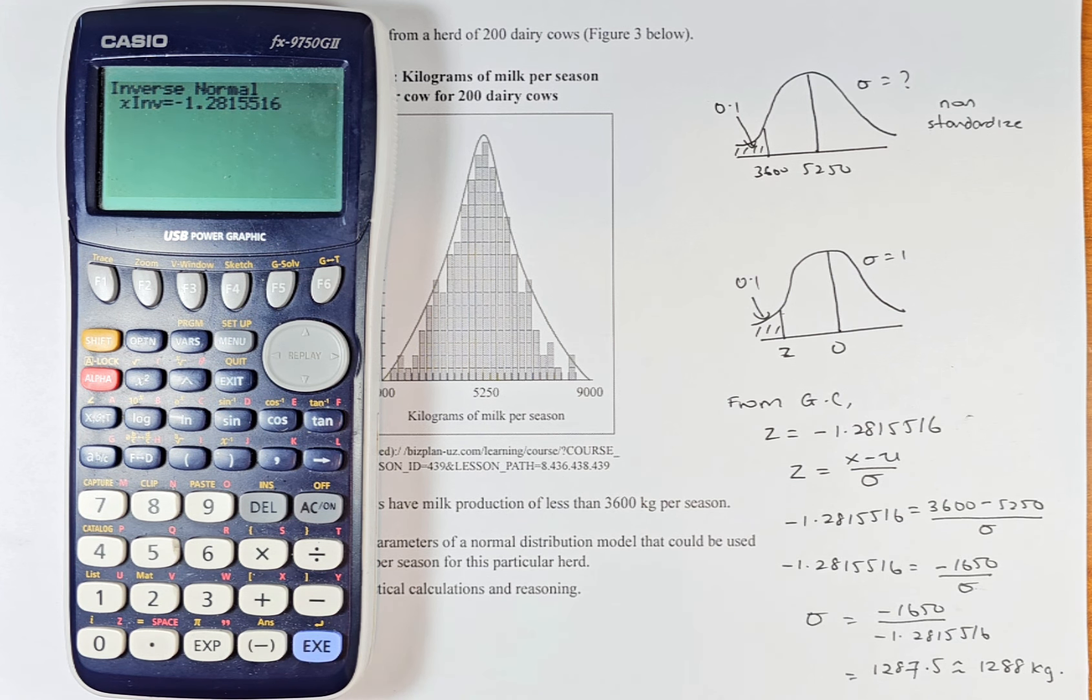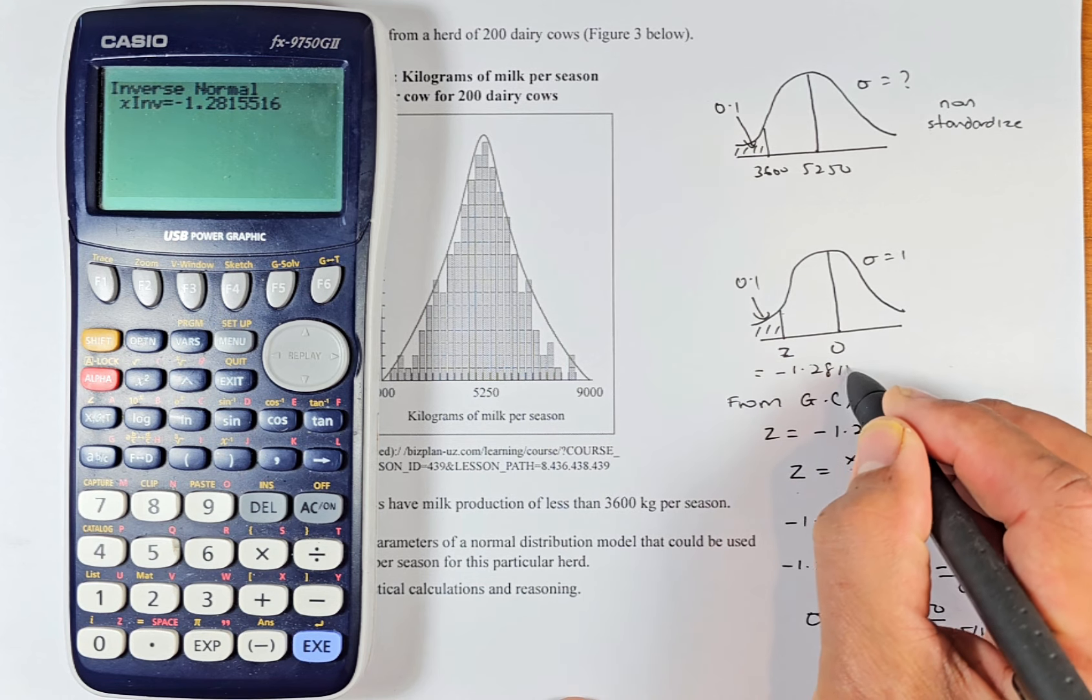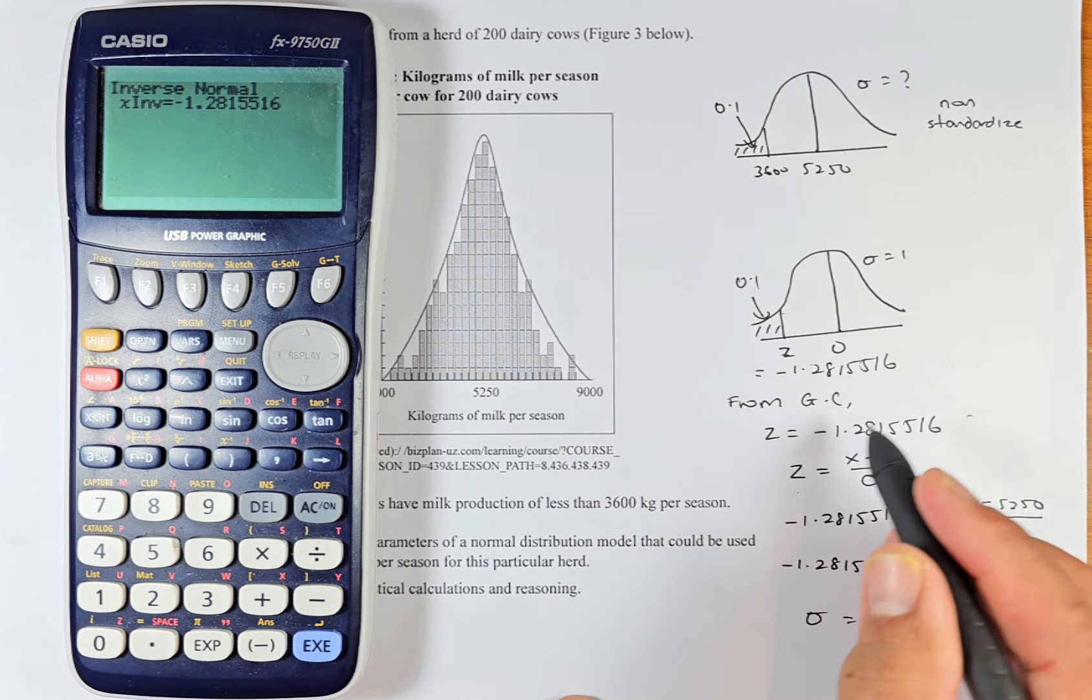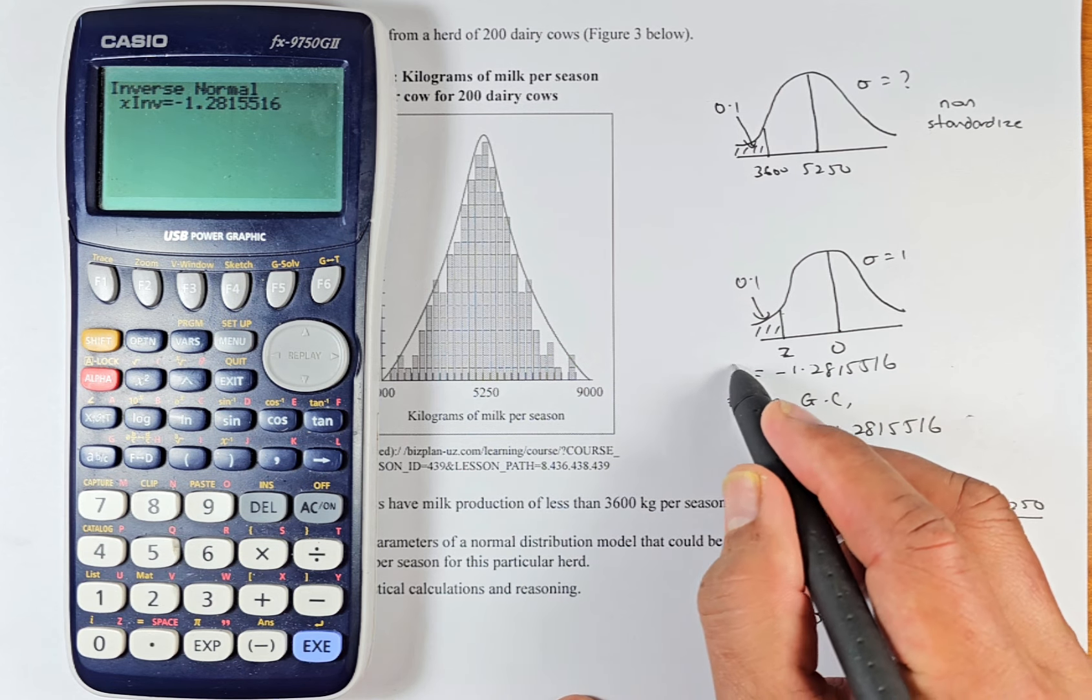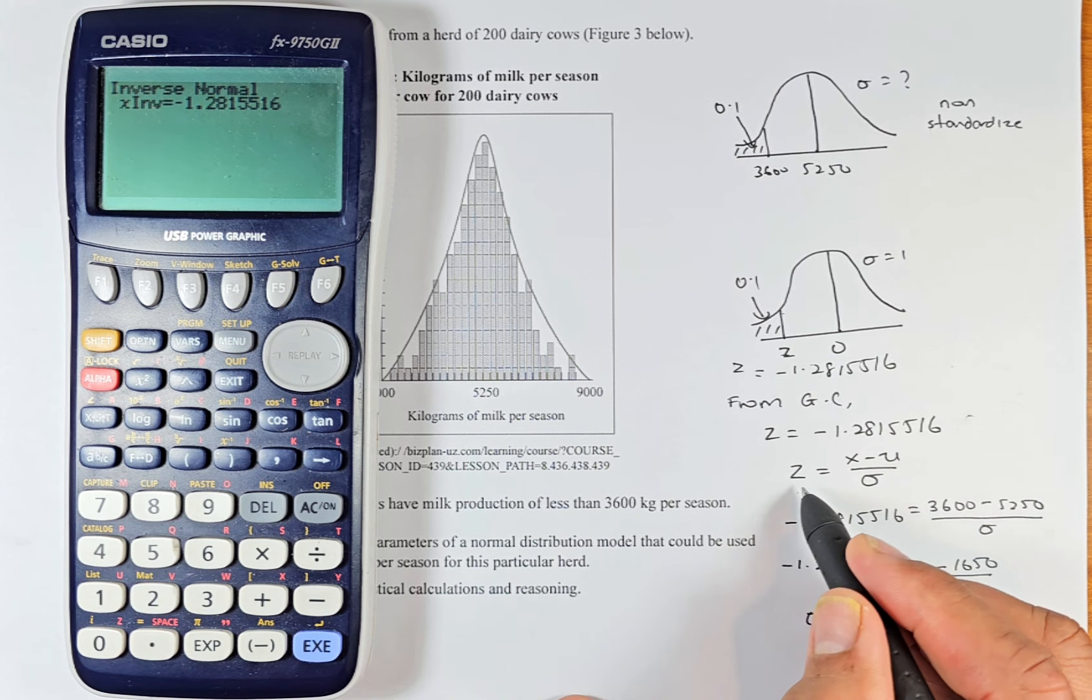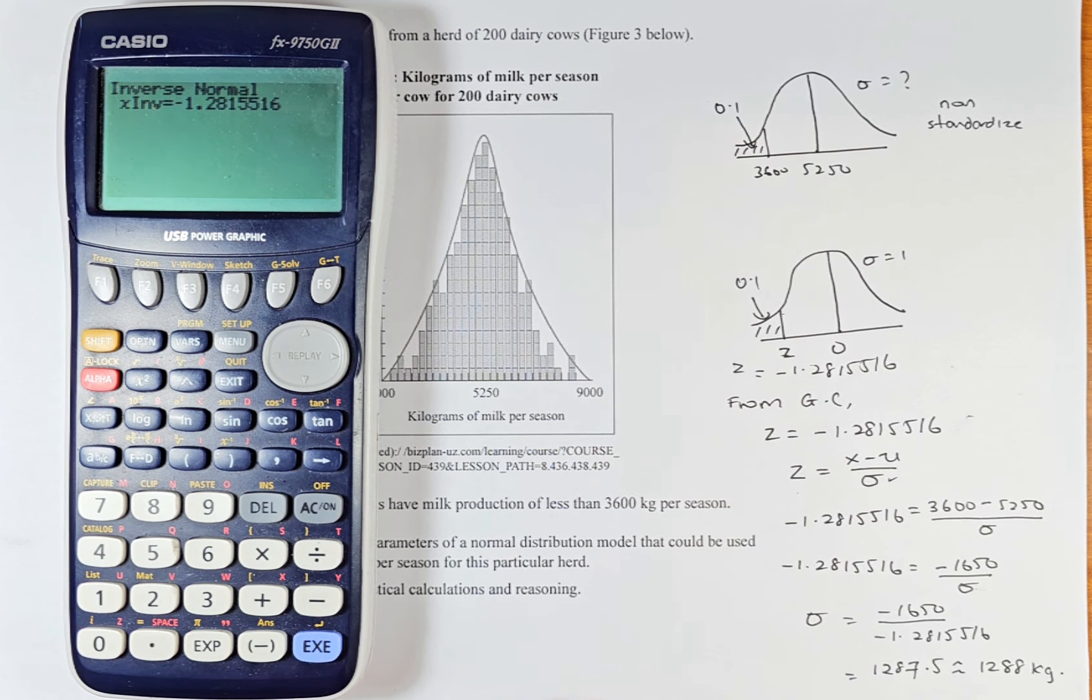And the answer is negative 1.28155516. So that's where the answer, z equals to negative, I'm going to write it down, minus 1.28155516. So we have found the z value is negative this number here. And what we're going to do, we're going to substitute this z into this equation. The equation is z equals x minus mu over sigma for us to be able to find the sigma in the non-standardized form.